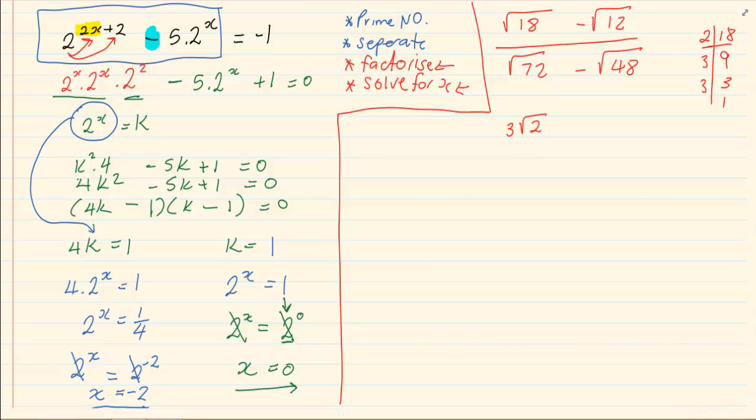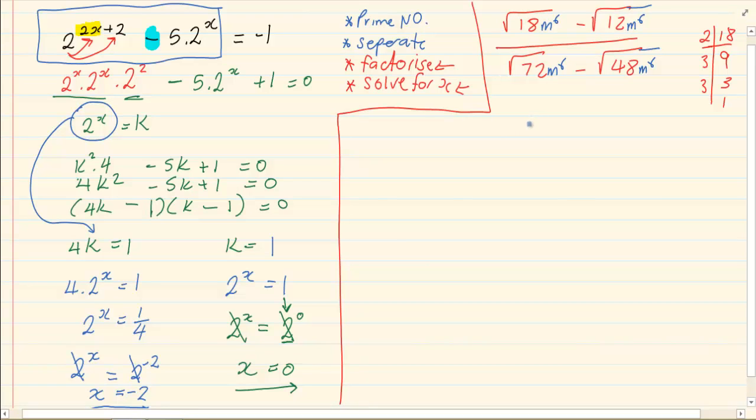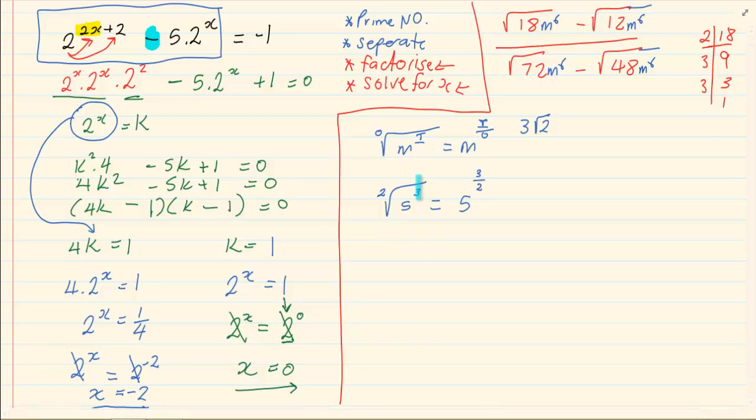Now let us make the question a bit more complicated. Let us put m^6 to every value. Okay. So for 18, we would have had 3√2. But how do we do m^6? Now the general rule for surds is that it is always the inside over the outside. So if I gave you 5^3 outside square root 2, my answer would be 5^(3/2). So we are taking inside over outside.